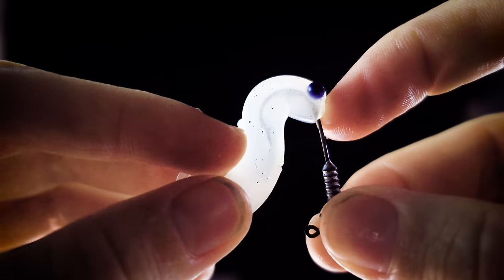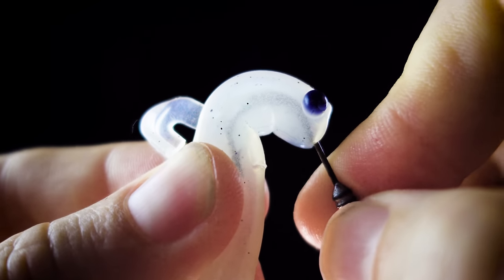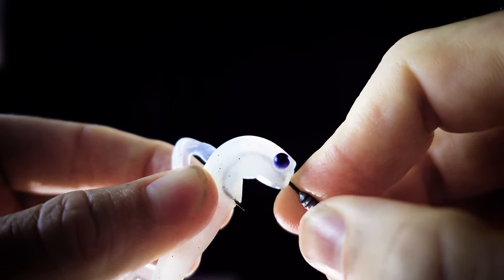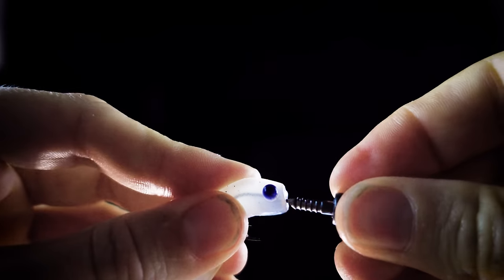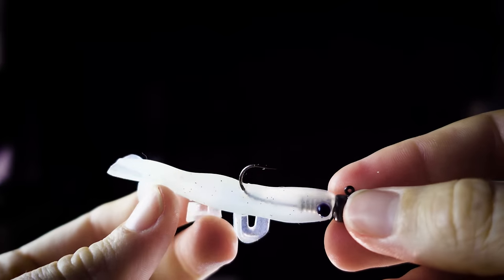My little nick is right there and my hook is getting very close to it. I'm at the point now where I'm going to rotate my hook up into the nick. And if I nicked it in the right spot, as I push this the rest of the way on, we should find a perfectly rigged soft plastic.